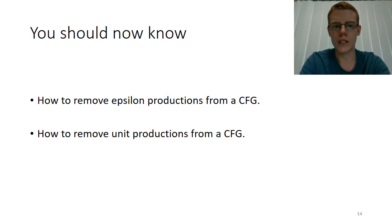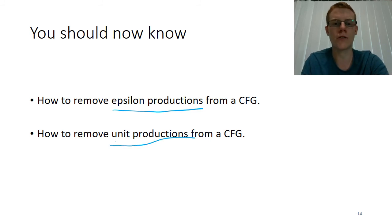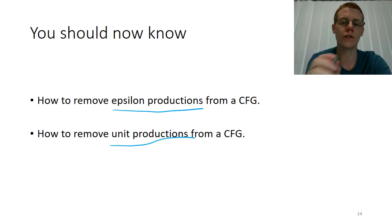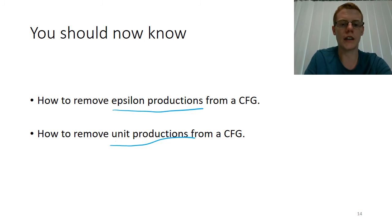What you should take from this video is how to remove epsilon productions from context-free grammars, and how to remove unit productions from context-free grammars. You should understand how we are eventually going to use these steps to turn any context-free grammar into a Chomsky normal form that accepts that language except for the empty string.